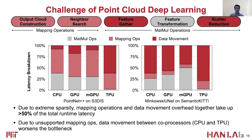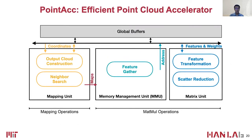For specialized neural accelerators like TPU, the data movement between core processors will significantly hurt their performance. So, to tackle these challenges, we present Point Tech, an Efficient Point Cloud Deep Learning Accelerator. It mainly comprises three parts: a mapping unit focusing on mapping operations, a memory management unit focusing on feature gathering, and a matrix unit focusing on feature transformation and scatter reduction.